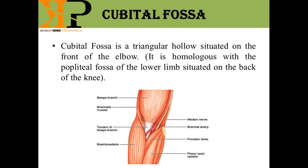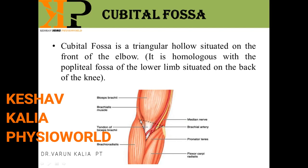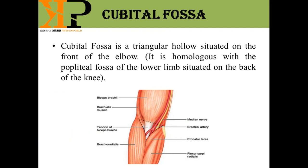Today we will discuss cubital fossa. Cubital fossa is a triangular hollow situated on the front of the elbow joint — a triangular space present in front of the elbow. It is homologous with the popliteal fossa of the lower limb, situated on the back of the knee, where there is also a hollow space called the popliteal fossa.